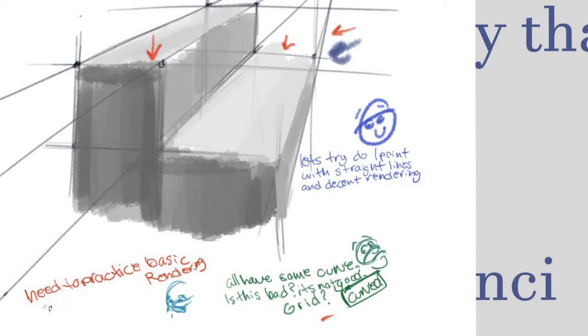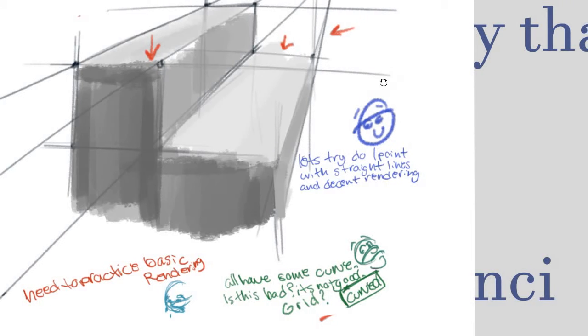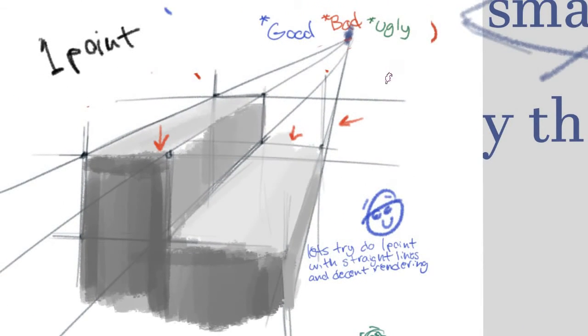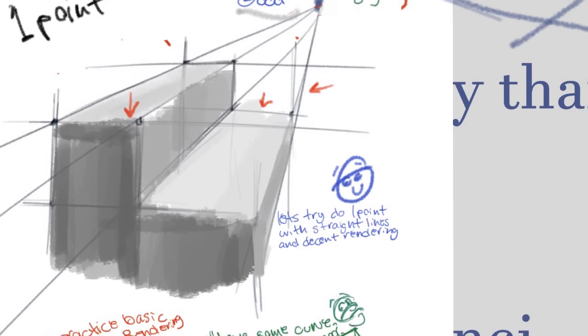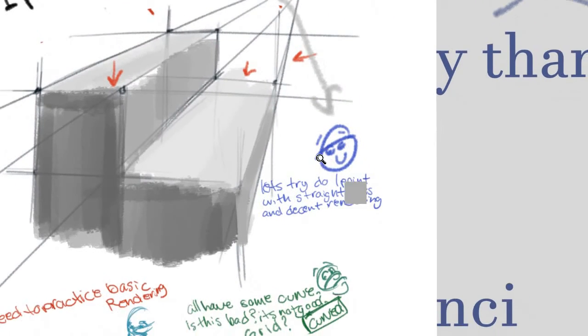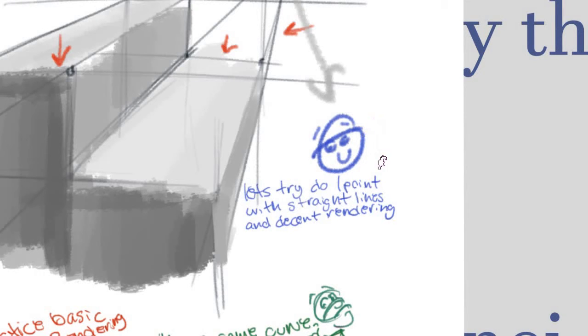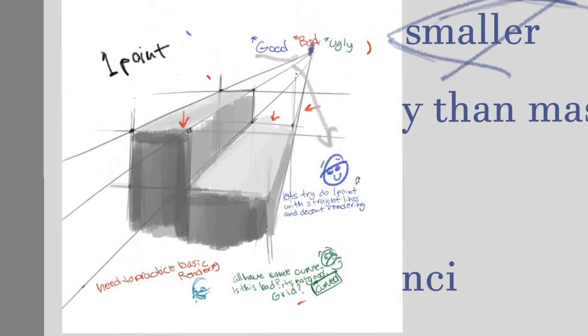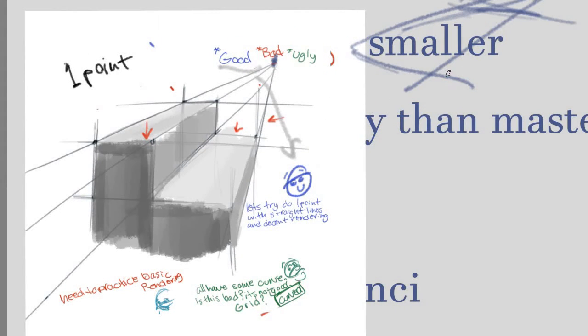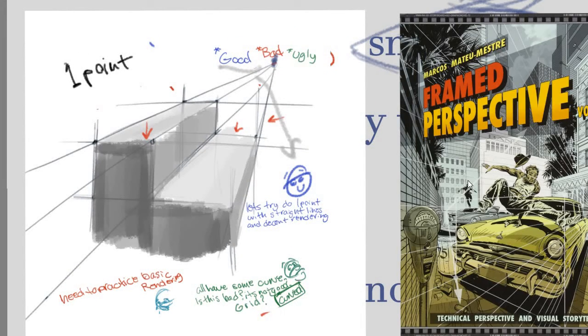I also need basic practice rendering, even though I understand a couple of things like things perpendicular to the light source have shadow on them. I understand it, but how well do I understand it - do I understand it enough that I don't need to no longer come back to it? So the good I chalked up as what to do in the future. I'll try to do this one-point perspective with straight lines and decent rendering, so maybe I'll try to do a project with perspective.